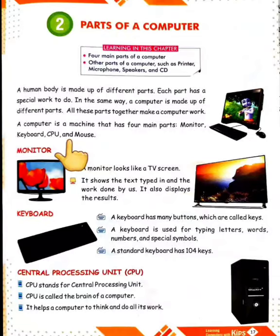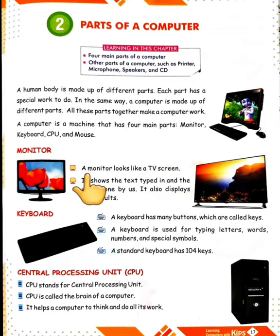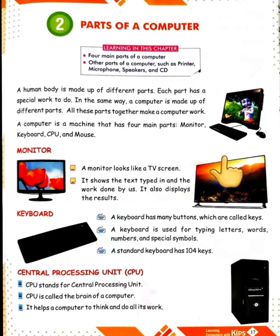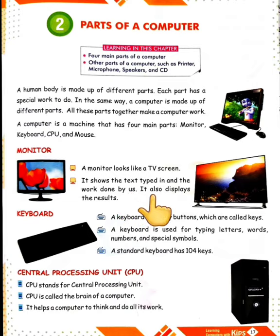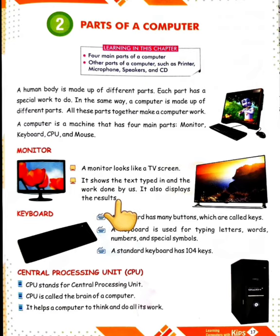The first part is the monitor. A monitor looks like a TV screen. It shows the text typed in and the work done by us. It also displays the results — so the monitor is an output device. Whatever work we do on the computer, the monitor shows it all.